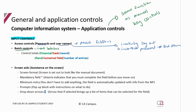There are three control totals: financial, hash, and record. A financial control total is the total rand amount — the total of all the monetary values of the data being input. A hash total is the sum of all numerical fields, such as quantities and prices. A record count is simply the number of documents or entries to be input.